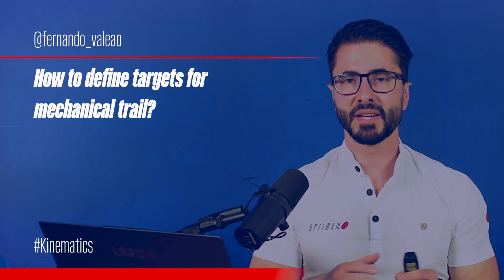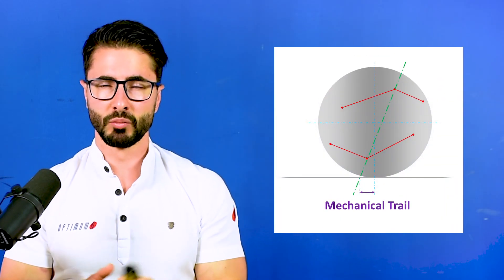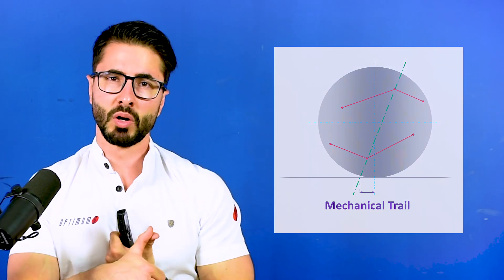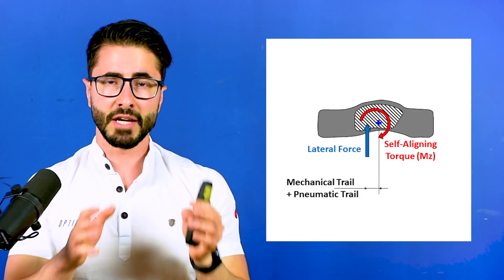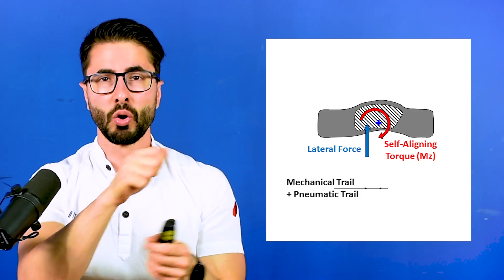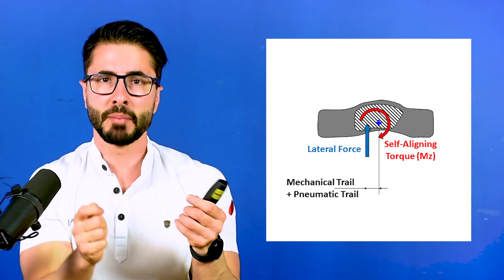How to define targets for mechanical trail? Mechanical trail, from the perspective of vehicle dynamics and driver feeling, will be influencing two main parameters. Number one, the total steering torque that the driver is feeling at the steering wheel — it cannot be so high that the driver cannot hold the steering wheel, and it cannot be so low that the steering wheel is not coming back when the driver releases the force. The second parameter is steering feedback. As the driver is steering, they feel a steering torque that will decrease. That happens because, as you corner, the pneumatic trail of the tire will decrease.